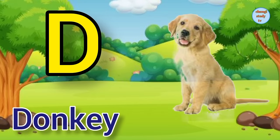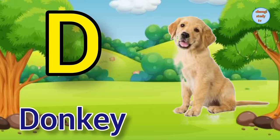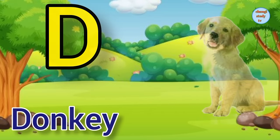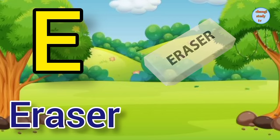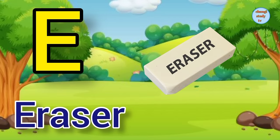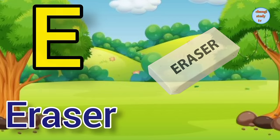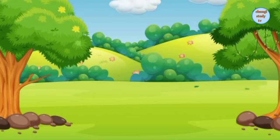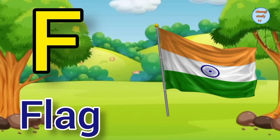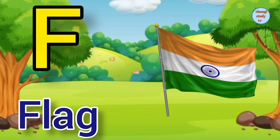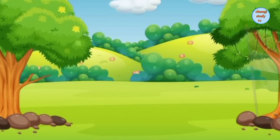D. D for dog, dog means kutta. E. E for eraser, eraser means rubber. F. F for flag, flag means jhanda.